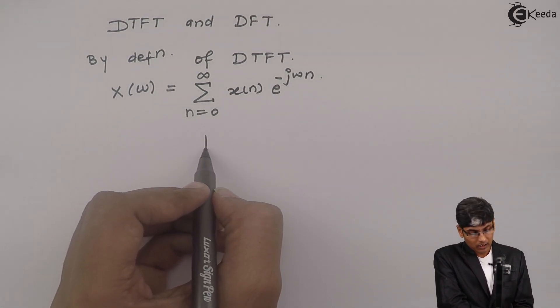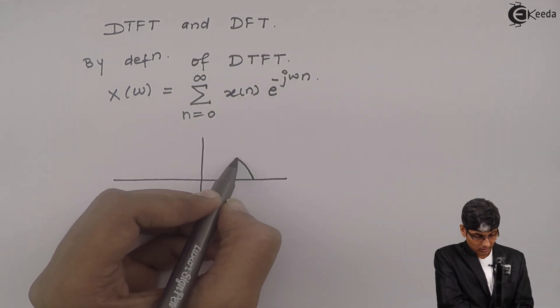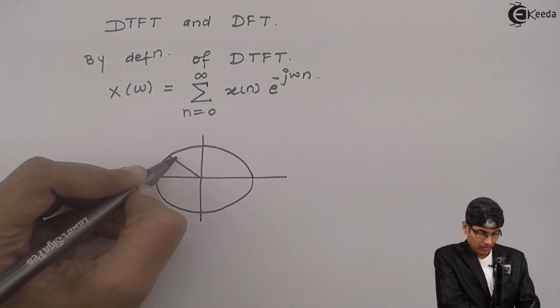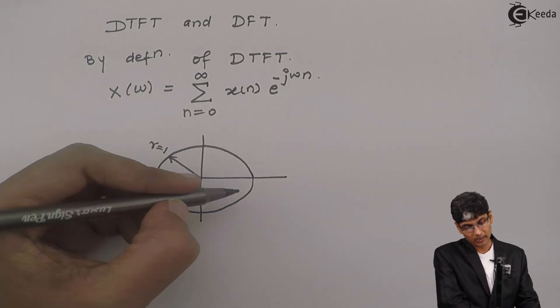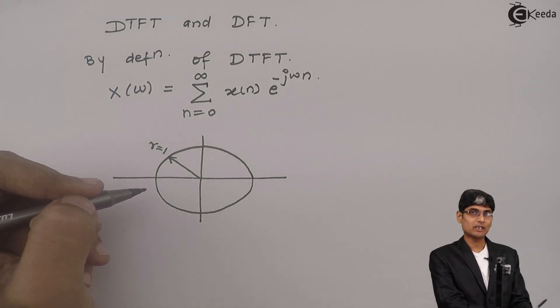If I draw the omega plane or the DTFT plane, it looks like a circle. That circle has a very special radius r equals 1, and omega is going continuously on this circle from 0 to 2π.